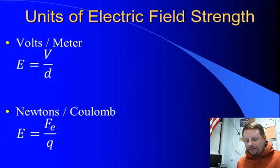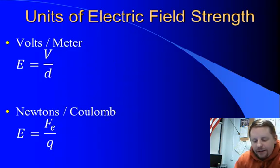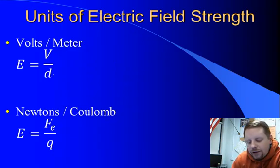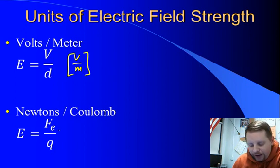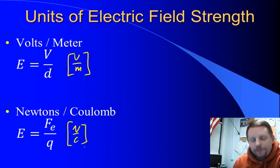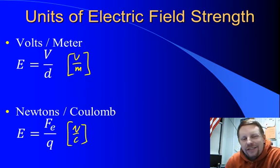Let's take a look. The units of electric field strength, if you calculate it using E equals potential difference over separation, is volts per meter. Now, we previously learned that electric field strength is the electric force divided by charge, so that would be in newtons per coulomb. How do we reconcile these two sets of units?